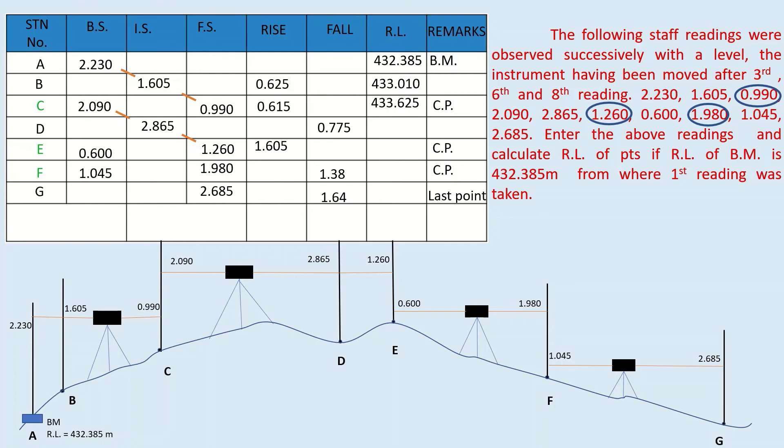At D, we got fall. So separate it from RL of C. So you will get 432.850. I hope you can do calculations for remaining levels too using rise and fall method.